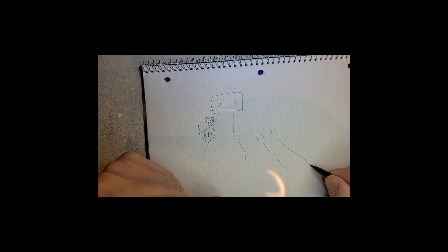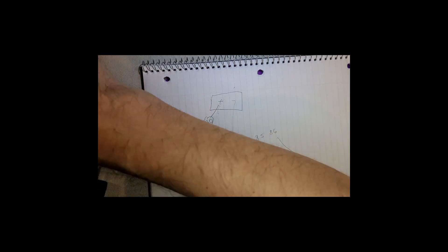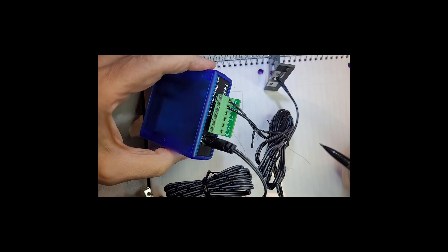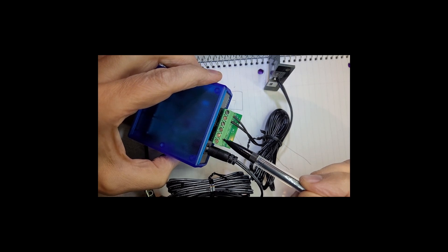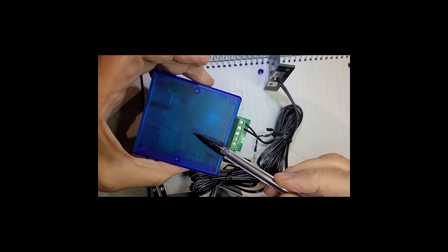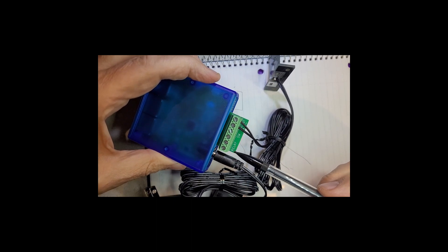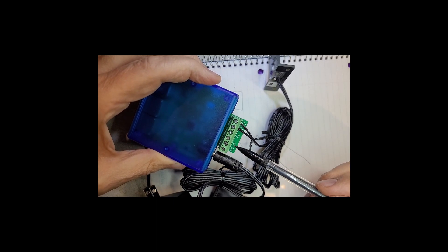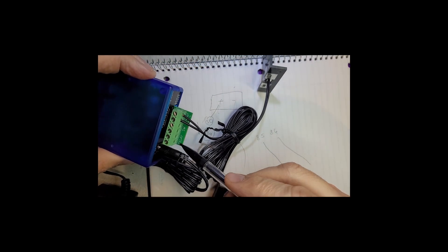You're going to connect it to the two screws marked relay. The older interfaces were black but same principle, the same thing. There's two green screws labeled relay. You're going to connect 85 and 86 to these two screws.